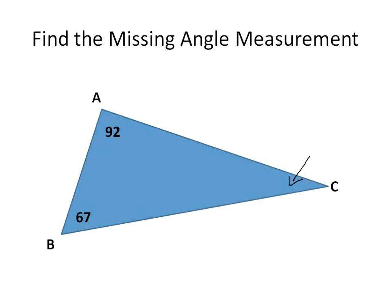Like angle C right there — knowing that it would be 180 degrees total. And if we subtract the other two angles, 92 degrees and 67 degrees, we would then get the other angle measurement. The other way we could write this is that 180 degrees is equal to 92 plus 67 plus our unknown angle, and we could call that X, for example.